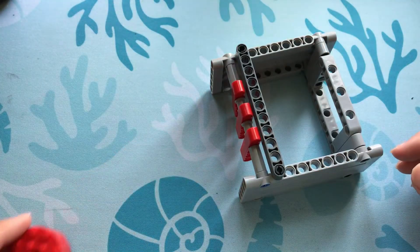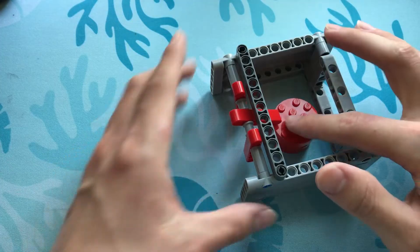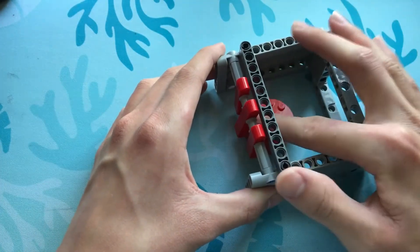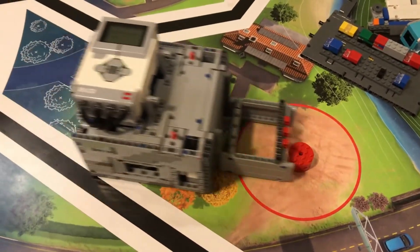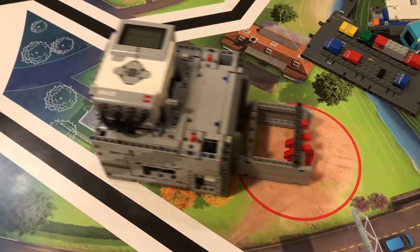So, when we take our object, we can see that it can go through but it can't come out. This one-way door works just like the other one. All the robot has to do is move forward to collect the object.